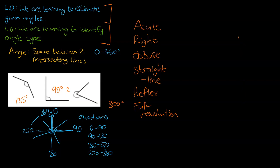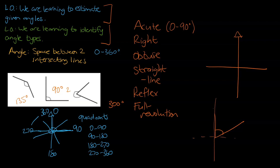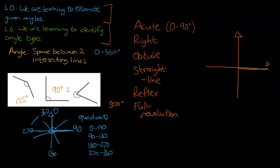We're going to use the quadrant type approach to demonstrate what each of these angles are. I'm going to draw a quadrant on the very left here. So there's our quadrants and we're going to start off with the arrow as our beginning point. An acute angle is any angle that is between 0 and 90 degrees. So just as an example, an acute angle would be here because using our quadrant approach, that would lie somewhere between 0 and 90.